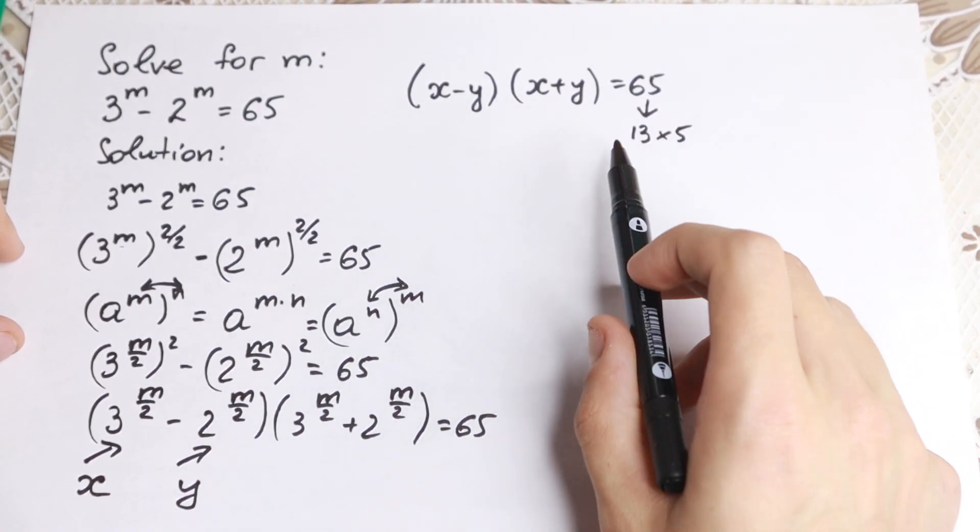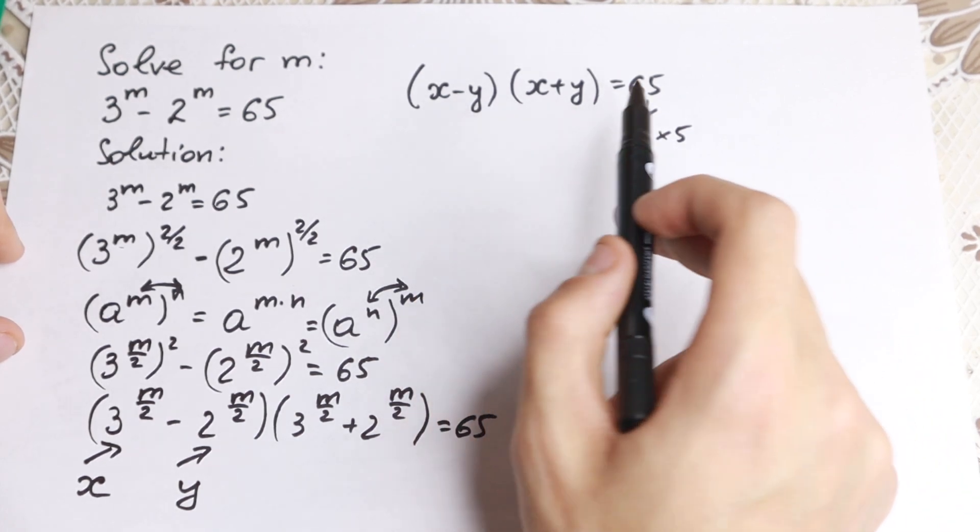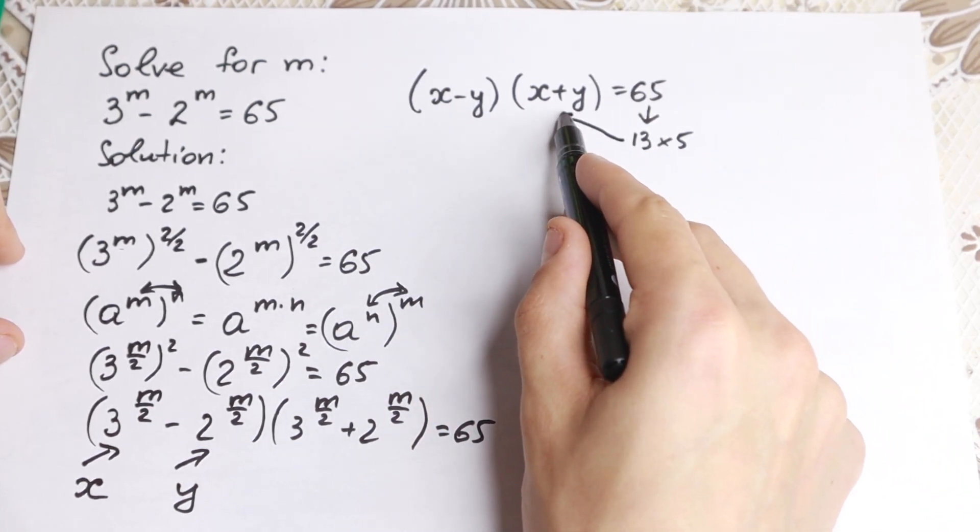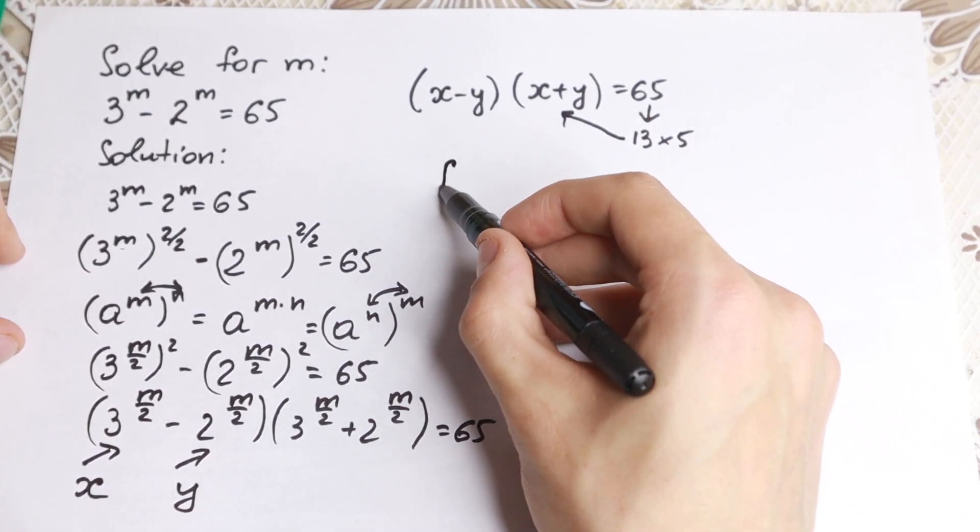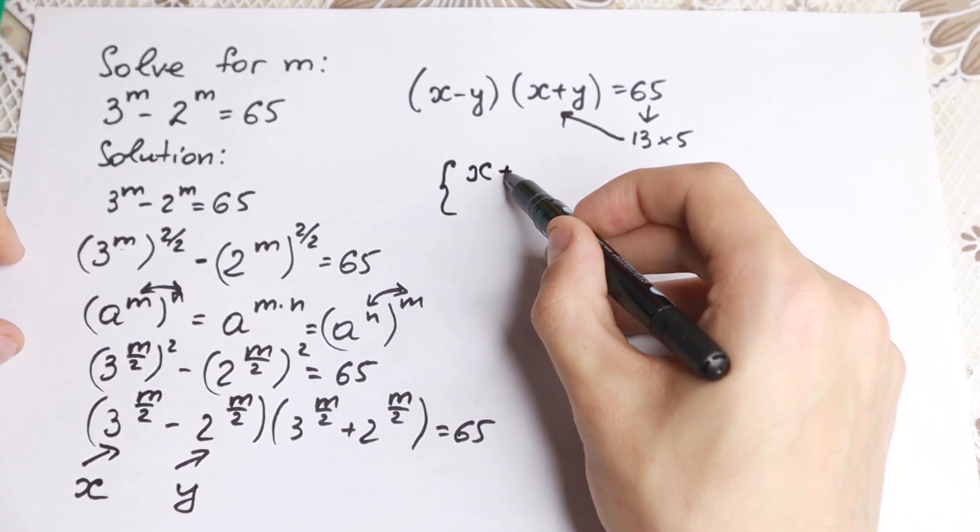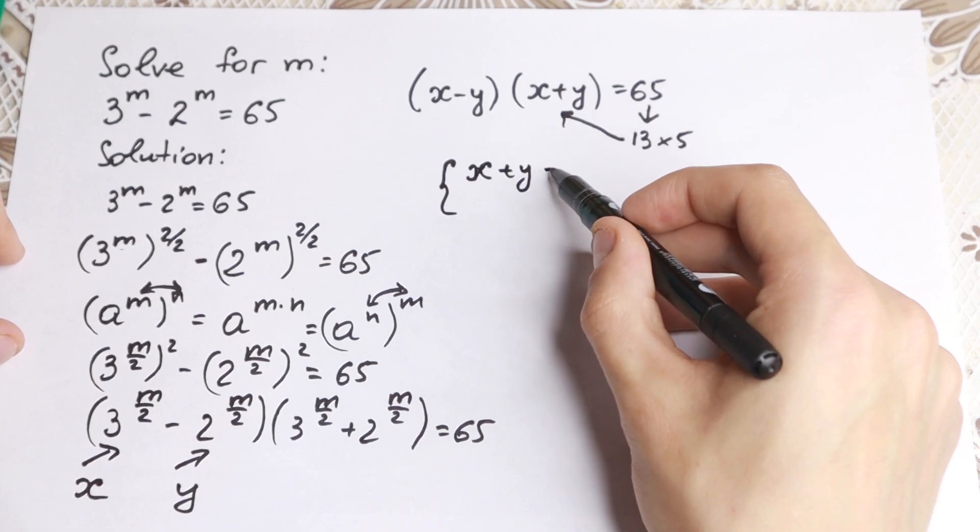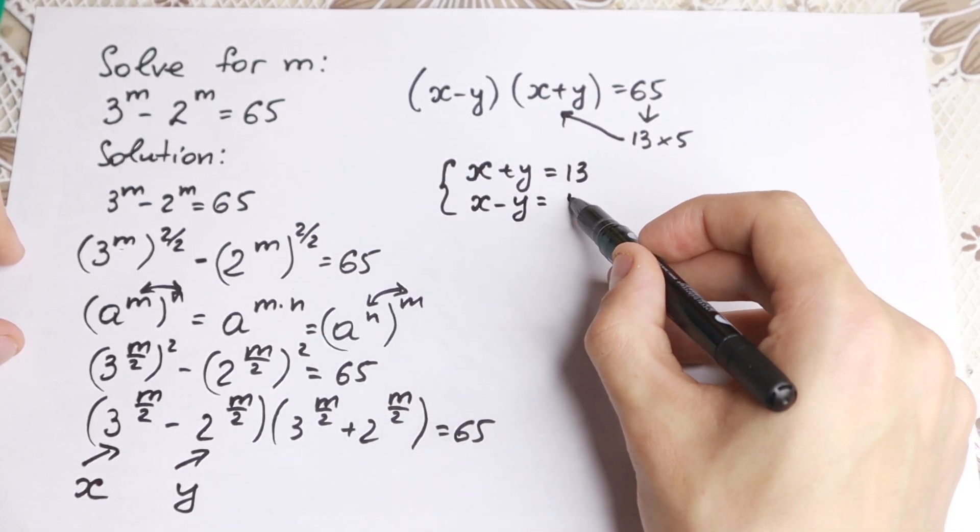But what parentheses will be 13 and what will be 5? Of course, if we have a subtraction and an addition, the bigger number will be with the plus and the smaller number will be with the subtraction. So we have a system of equations, a really good system of equations. We have that x plus y equal to 13 and x minus y equal to 5.